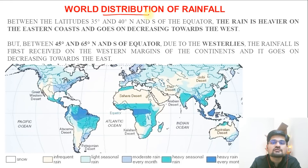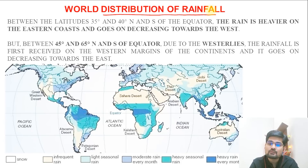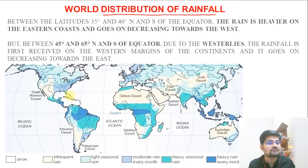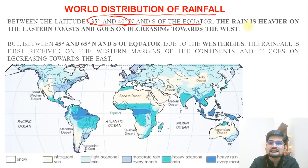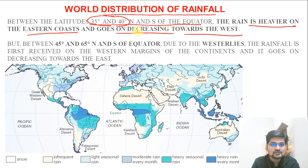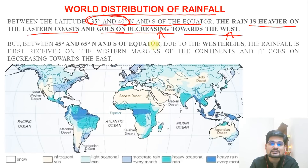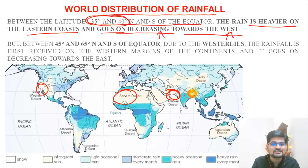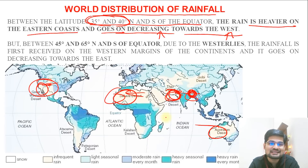For the distribution of rainfall, temperature and pressure belts of the world help us correlate and understand what kind of rainfall occurs where. Between latitudes 35–40° north and south of the equator — the subtropical belt — rain is heavier on the eastern coast and decreases toward the west. This is why most of the world's major deserts are found on the western margins of continents in this latitude band, as the east receives more rainfall while the west is dry.